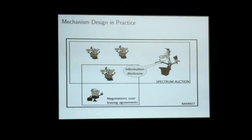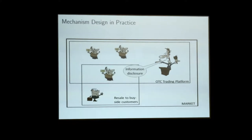Coming back to my two examples: suppose I'm a third party in the aftermarket negotiating over leasing agreements with someone who bought spectrum. I'm going to be interested in knowing how much this person paid, because that's informative about their value. Therefore, the auctioneer has to make a very conscious choice of how much of this data to make available to outsiders. In financial markets, the transparency of the trading mechanism determines how much information is available to players in the resale stage. The goal of this project is to understand how to design mechanisms when they are followed by an exogenous aftermarket, with particular emphasis on how transparent those mechanisms should be.